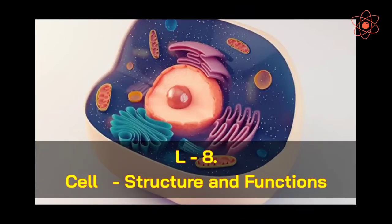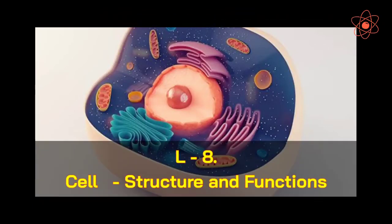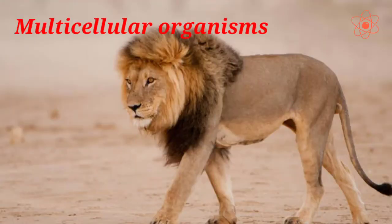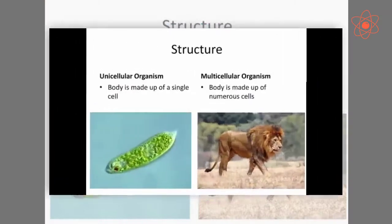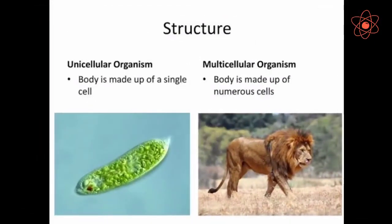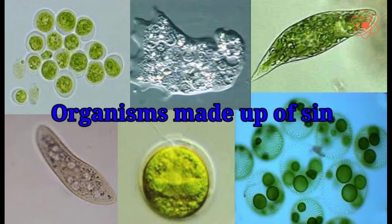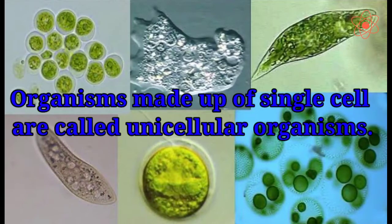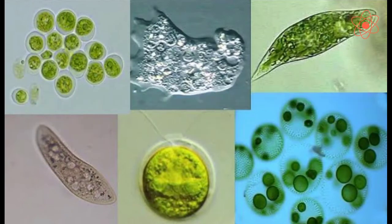Greetings to all. Let us discuss today about unicellular and multicellular organisms. Living organisms can be classified as unicellular or multicellular on the basis of the number of cells present. Some organisms are made up of a single cell. These are called unicellular organisms.